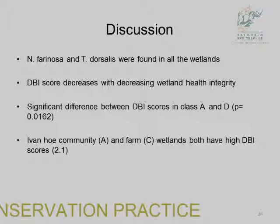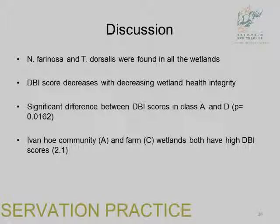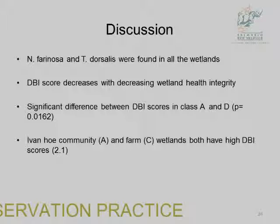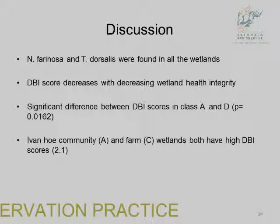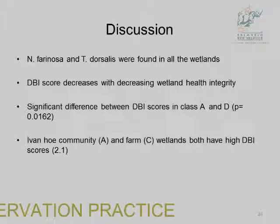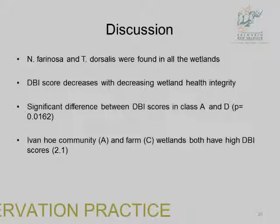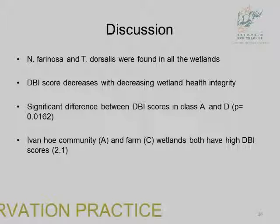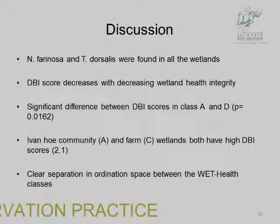Two wetlands — an urban homestead wetland in class A and a farm wetland in class C — had higher DBI scores than wetlands I categorized as pristine. This exposes a weakness of WET-Health: because it relies on the expertise of the person assessing the wetland, there is a lot of room for different scores. You can reach different scores for the same wetland depending on the assessor, even using the same tool.